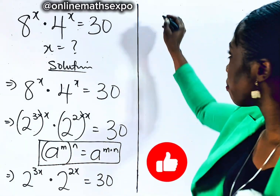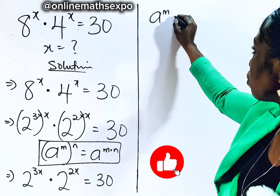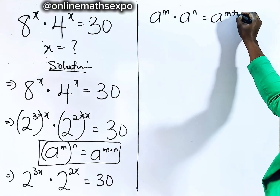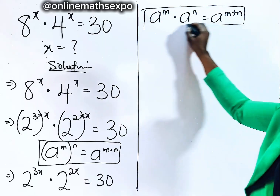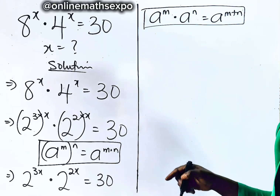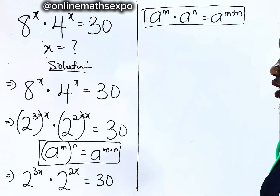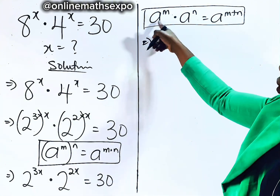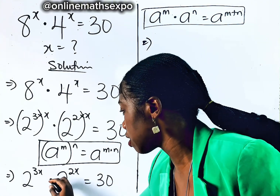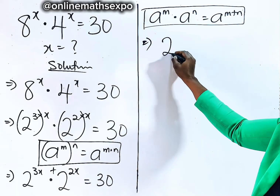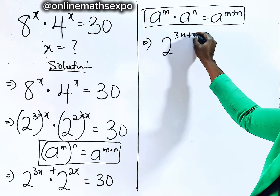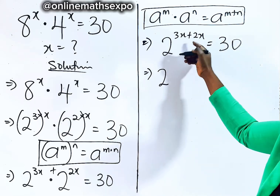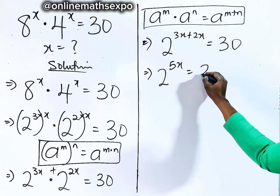Also remember: for every 8 to the power of m multiplied by 8 to the power of n, it is 8 to the power of m plus n — the powers add when the bases are the same and the terms are multiplying. So here, the bases are the same, so we add the powers: 2 to the power of 3x plus 2x, giving us 2 to the power of 5x, is equal to 30.